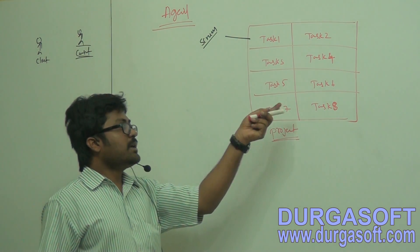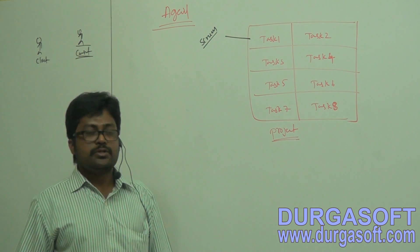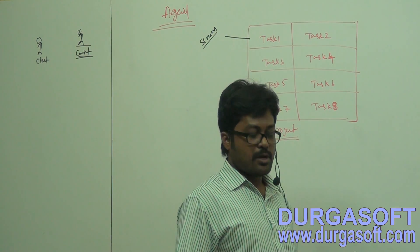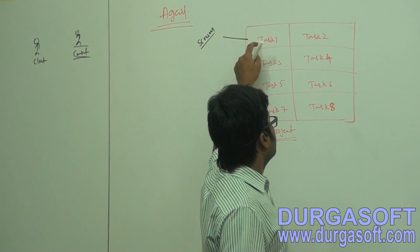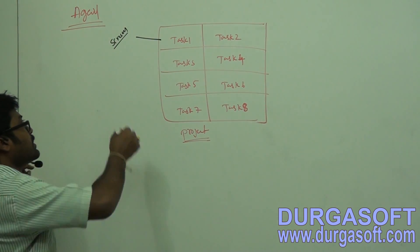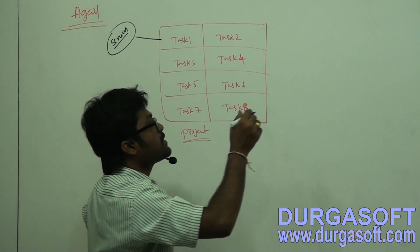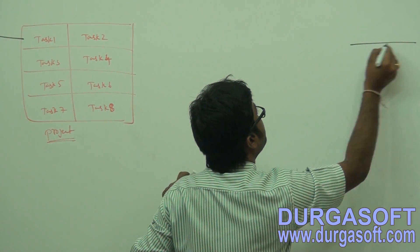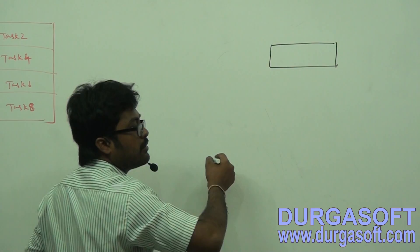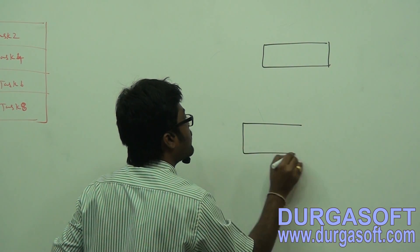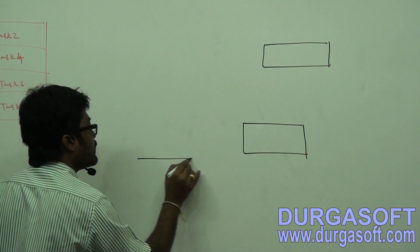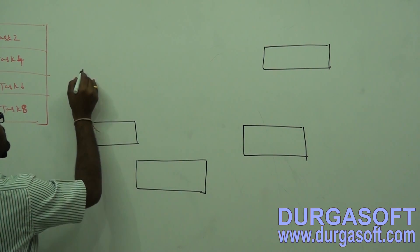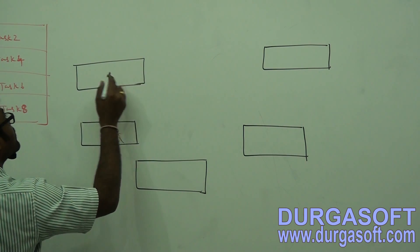A project needs to be divided into multiple independent tasks. Independently, you need to start designing and implementation of each task. To develop each task, we need to use the Agile model. In the case of the Agile model, it will start with requirement specification, then designing, then implementation and testing, then maintenance.